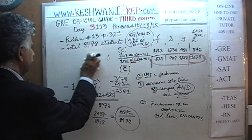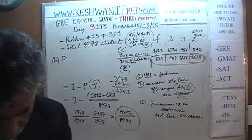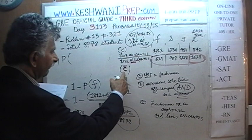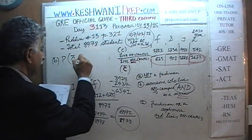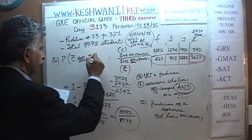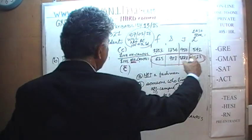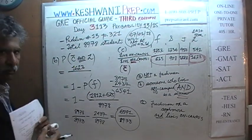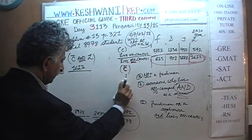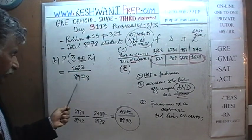If you want to set it up in symbols: the probability of C-bar (lives off campus) AND L (senior). C with a bar on top denotes someone who lives off campus — that's the first quality. And L for seniors, the last year. How many such people did we find? Right here: 1,623. Out of how many total? We need to figure that out.